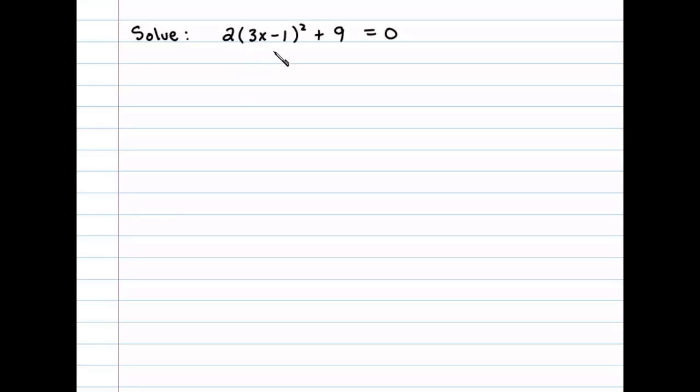Solve 2(3x - 1)² + 9 = 0. We'll solve this by extracting the roots. In that case, we need to isolate the square term.